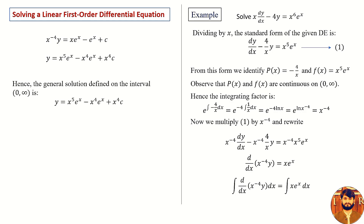Solving for y, we get y equals x to the power 5 e raised to the power x minus x to the power 4 e raised to the power x plus x to the power 4 times C. Hence, the general solution defined on the interval 0 to infinity is y equals x to the power 5 e raised to the power x minus x to the power 4 e raised to the power x plus x to the power 4 times C. This is our general solution.